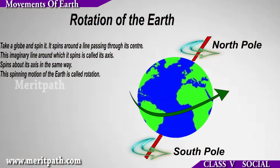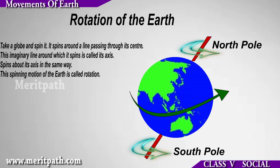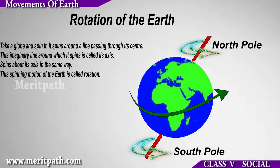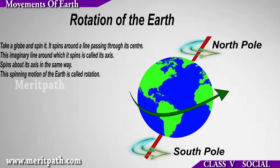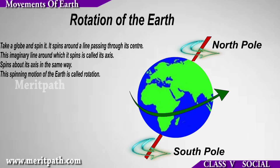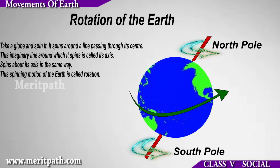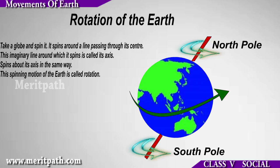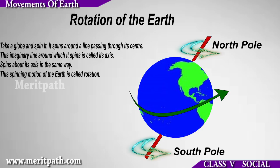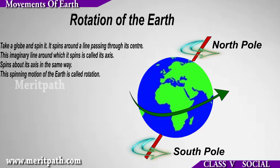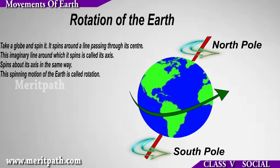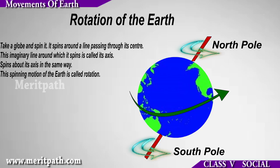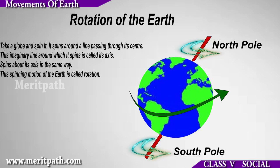Rotation of the Earth: Take a globe and spin it. It spins around a line passing through its center. This imaginary line around which it spins is called its axis. The earth also spins about its axis in the same way. This spinning motion of the earth is called rotation.